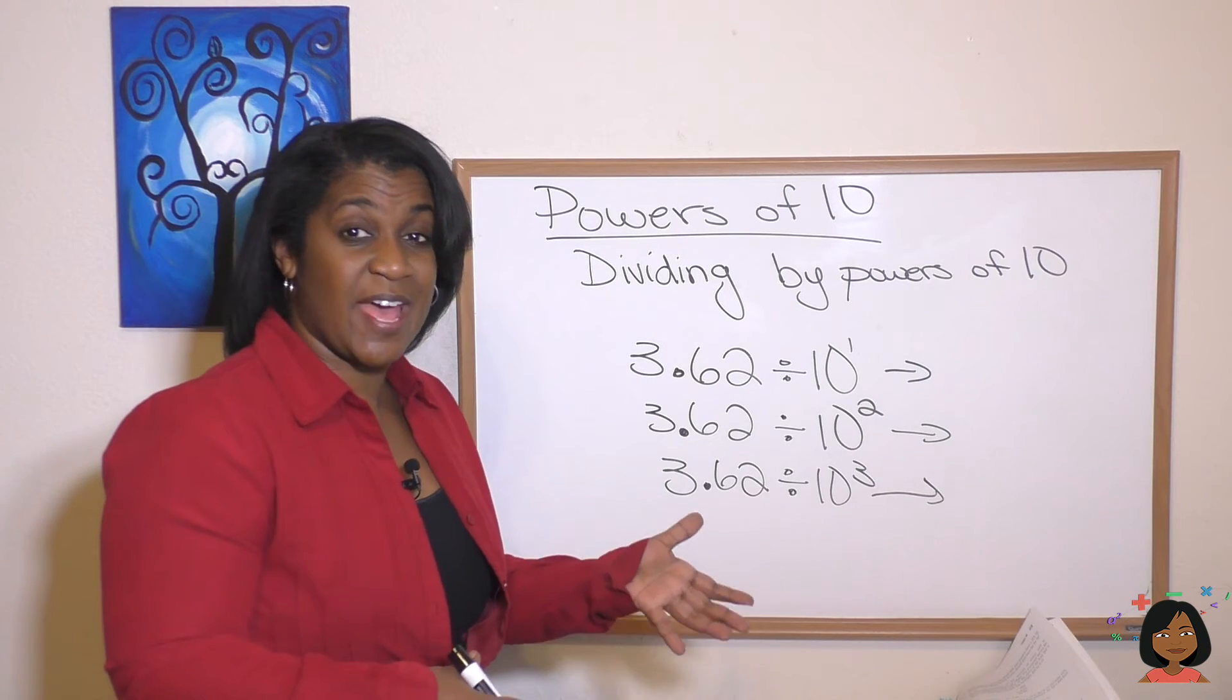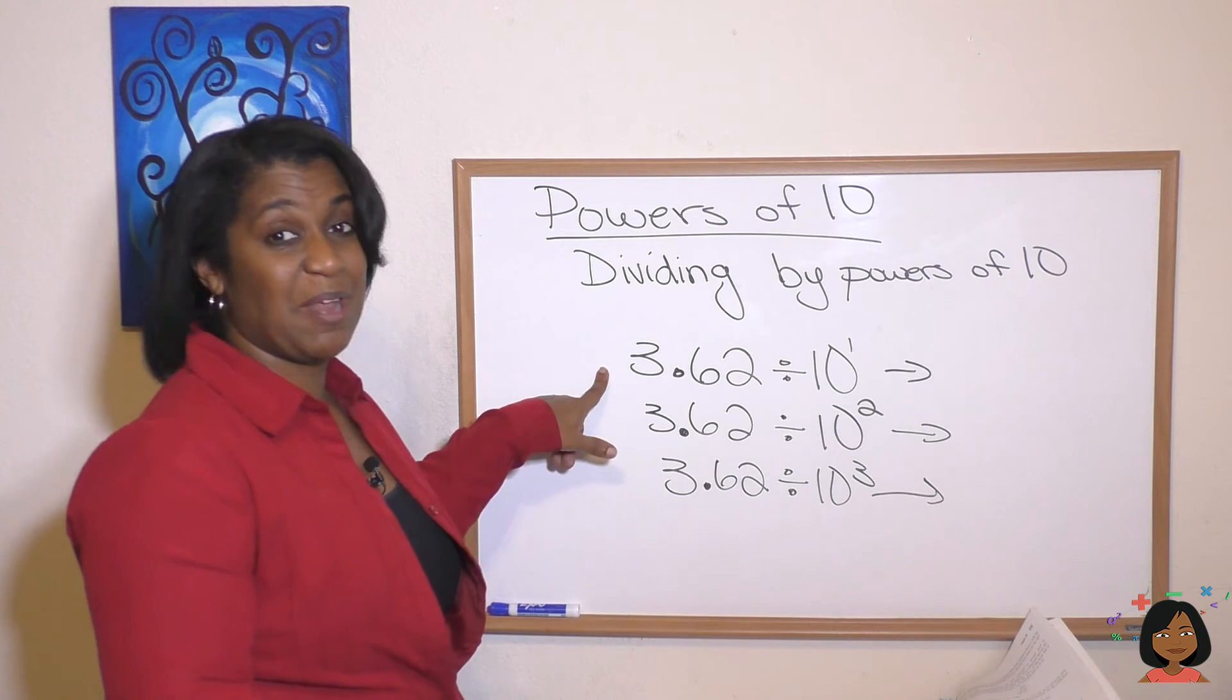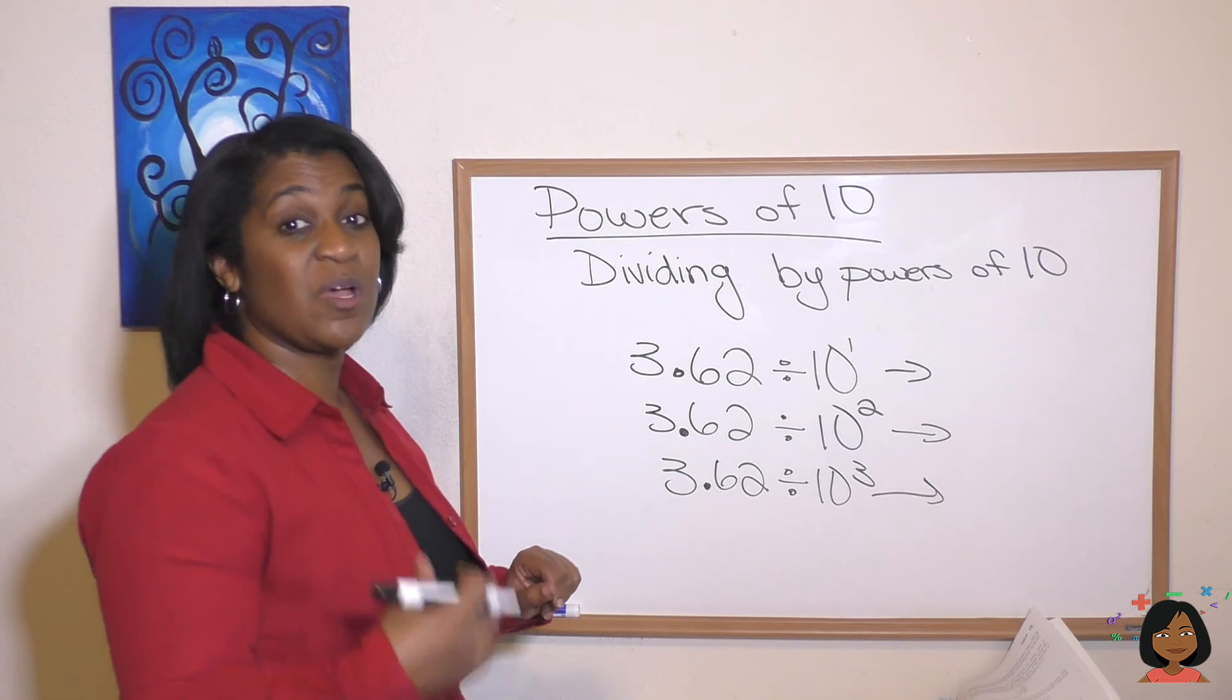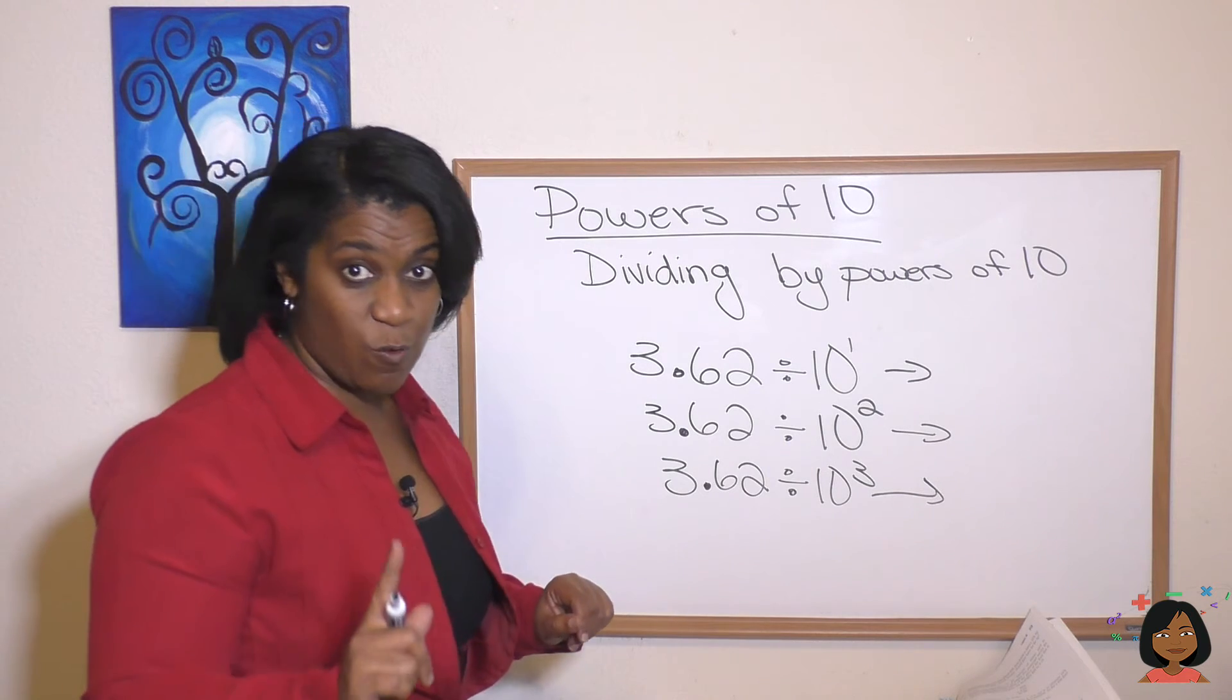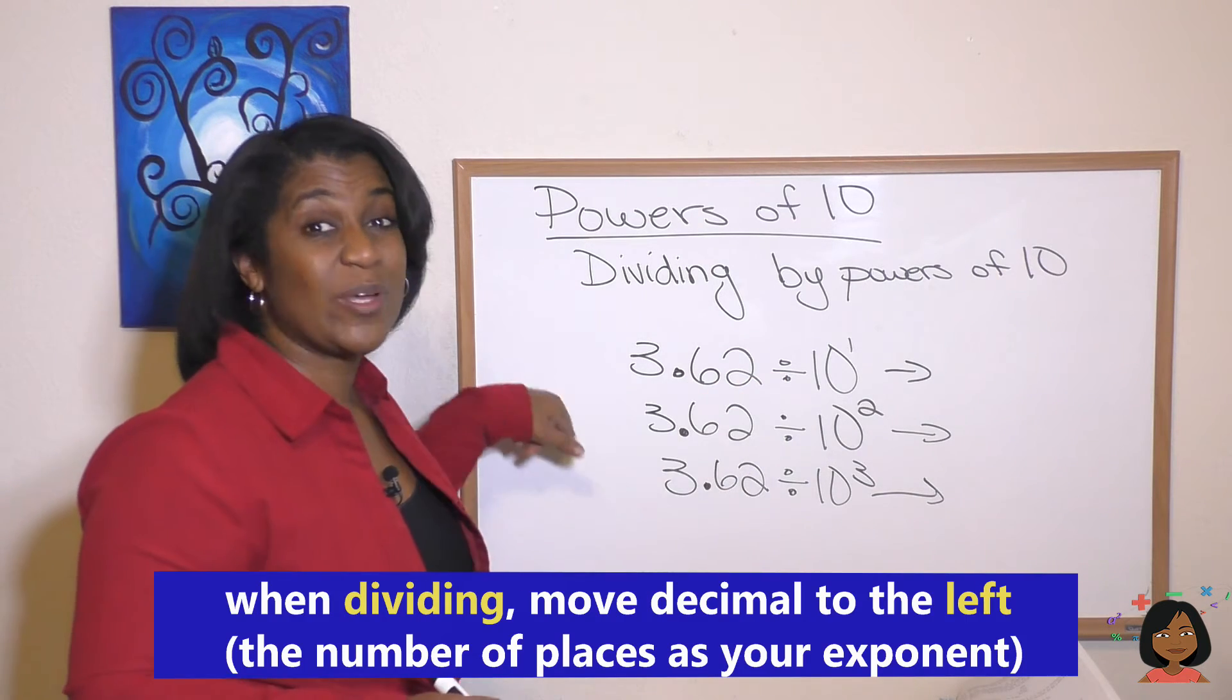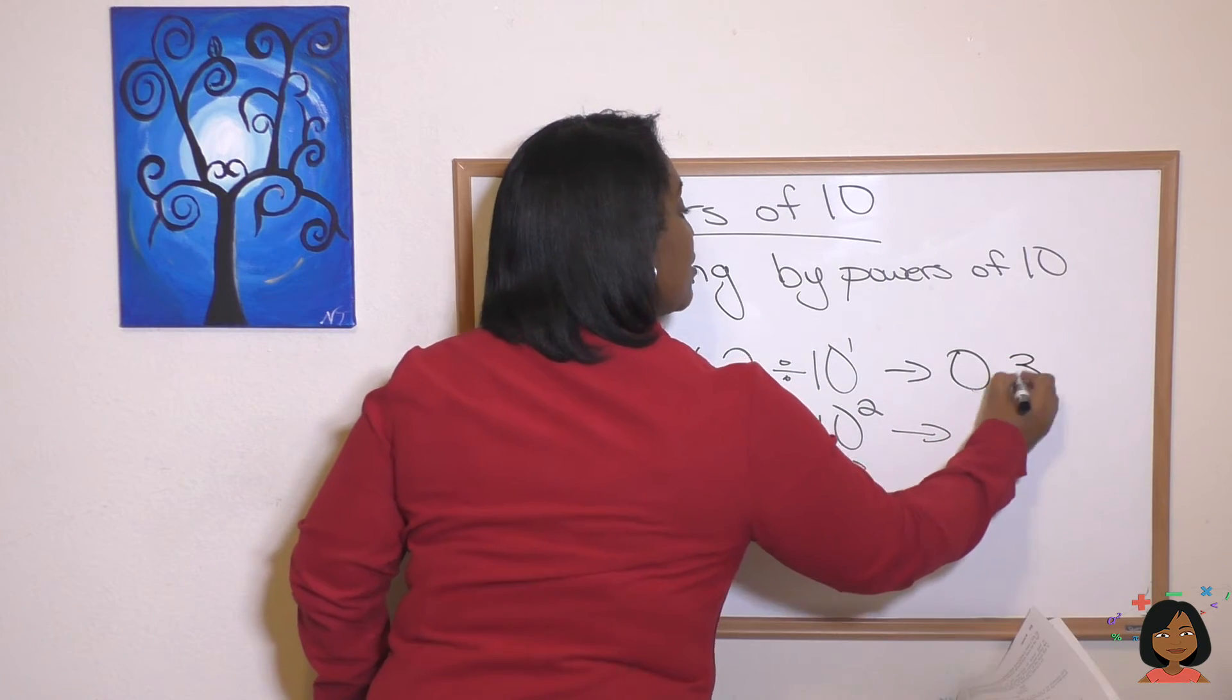And we can continue on and on by multiplying this way by powers of 10. Just multiplied by powers of 10. This time we're going to divide by powers of 10. Here we go. Same number. 3.62 divided by a power of 10. This time the decimal point is going to move one place. This time it's going to the left. So it'll be 0.362.